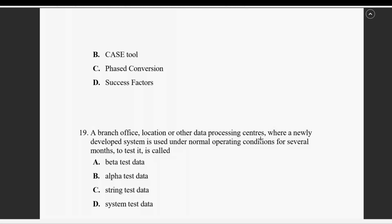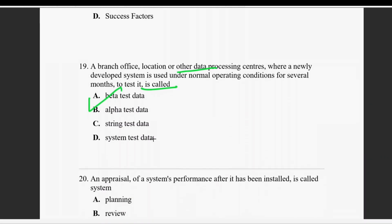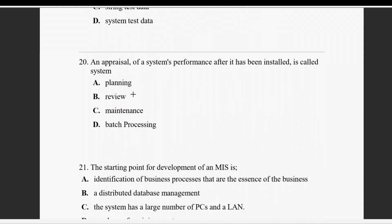Question nineteen: a branch of its location and another data processing center for a newly developed system used under normal operating conditions for several months — that is definitely a beta test. A newly developed system tested under normal operating conditions at another data processing center location is a beta test.